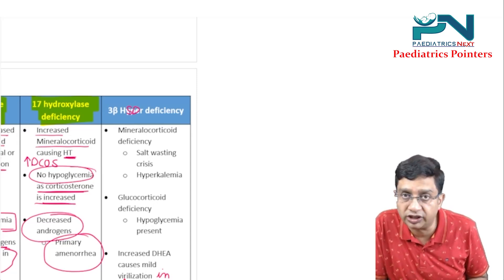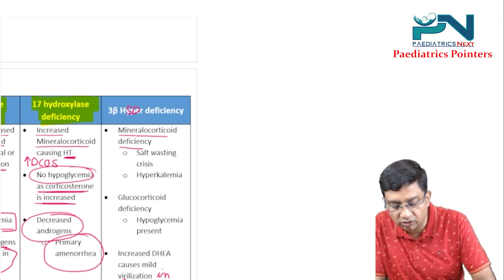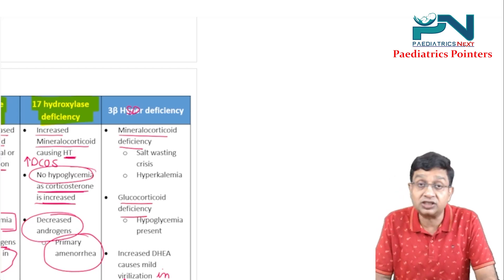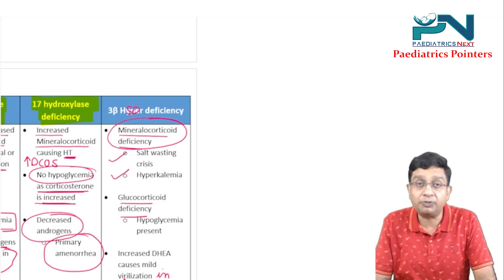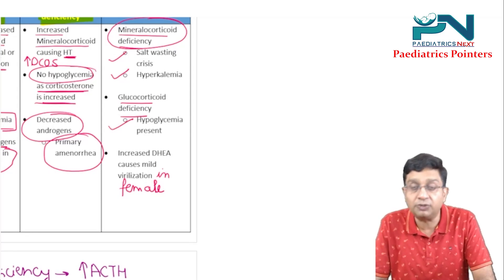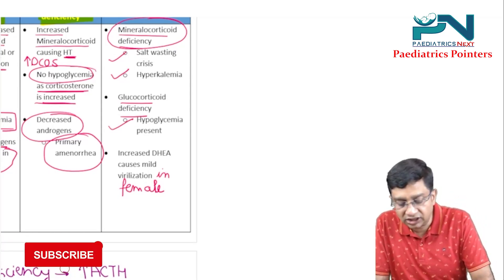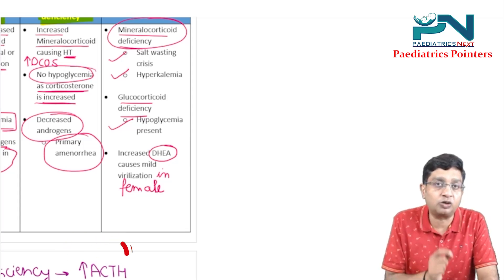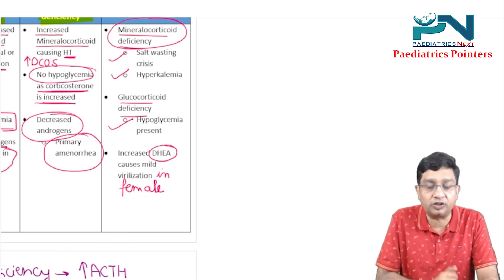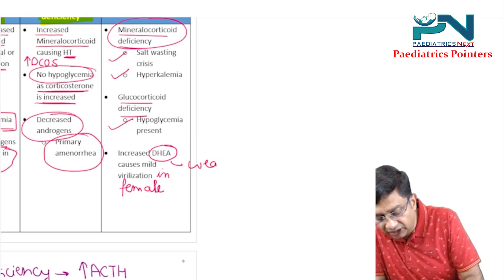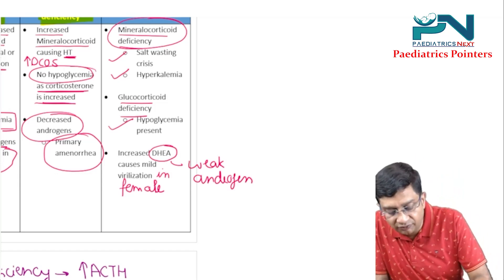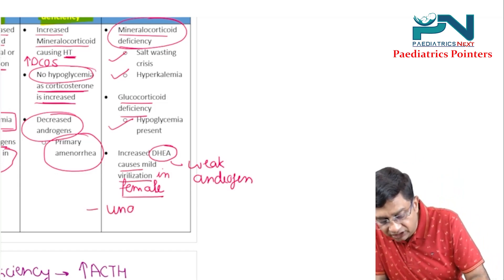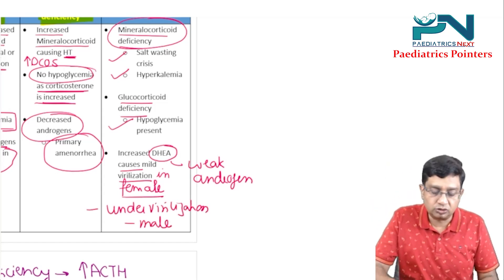In 3-beta hydroxysteroid dehydrogenase (HSD) deficiency, there is mineralocorticoid deficiency and glucocorticoid deficiency as in 21-hydroxylase. So there is salt wasting crisis, hyperkalemia, and hypoglycemia. The level of DHEA (dihydroepiandrosterone) is increased, which is a weak androgen. Due to these weak androgens, in females there is mild virilization, and in males there is under-virilization.